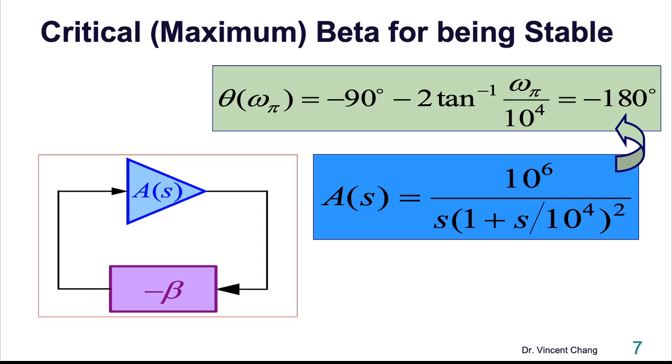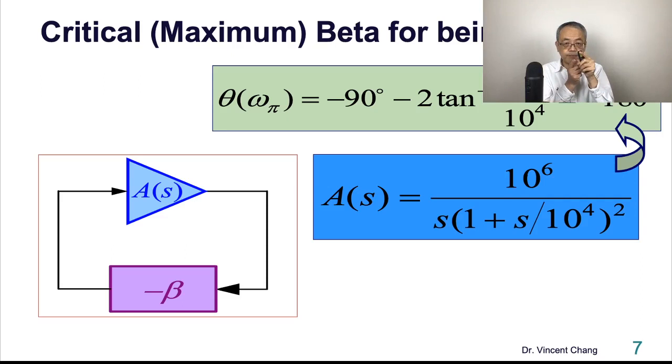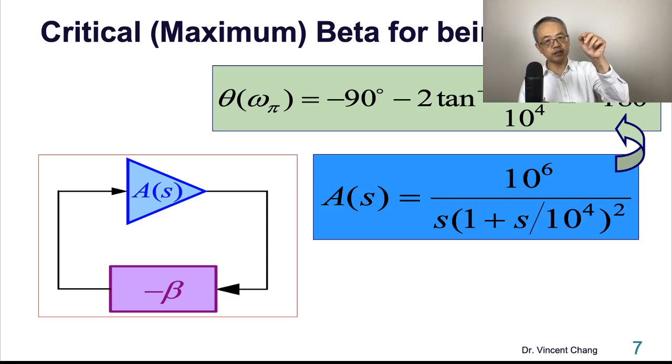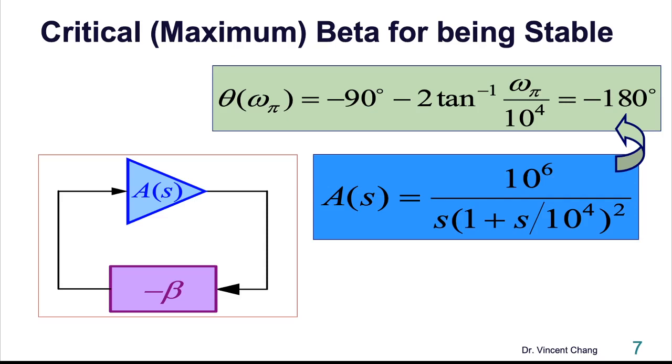The phase of A, the phase of the open loop transfer function. The first term, look at the denominator S. The corresponding angle of the S term is negative 90 degrees. And then for the second and third terms are the same, so negative two. This is standard single pole low pass transfer function, so it's negative arc tangent omega divided by 10 to the fourth power. At this frequency, omega_pi, the phase angle turns into 180 degrees. Then you try to solve the omega_pi.